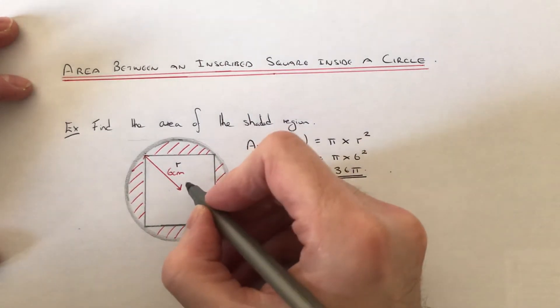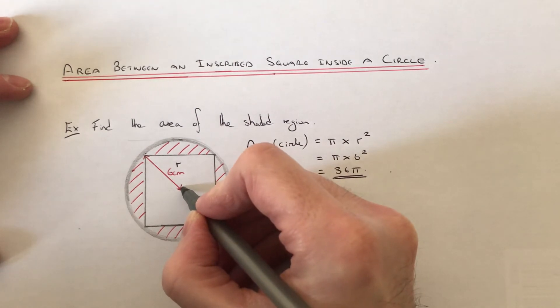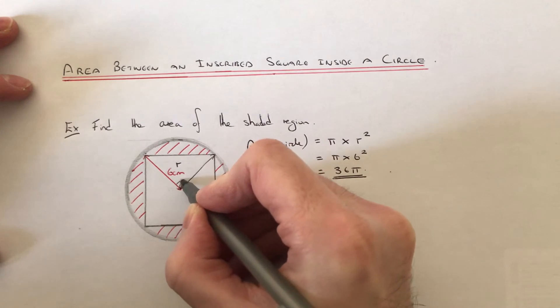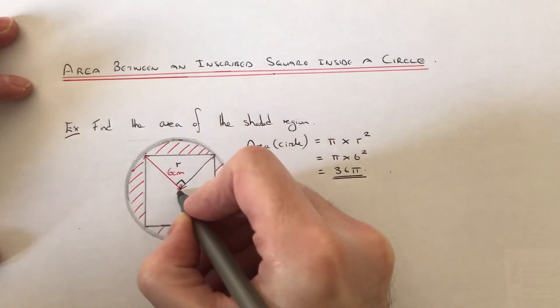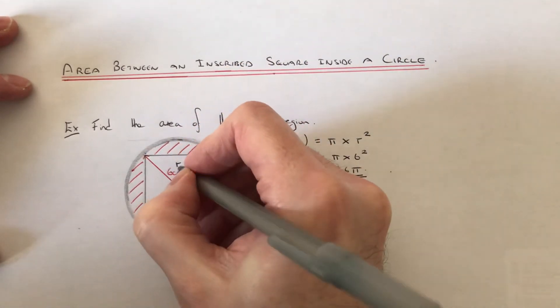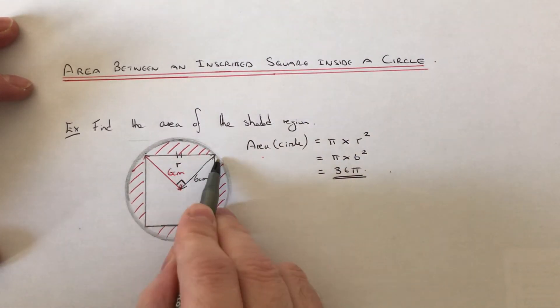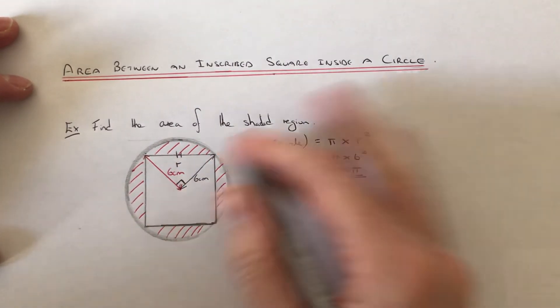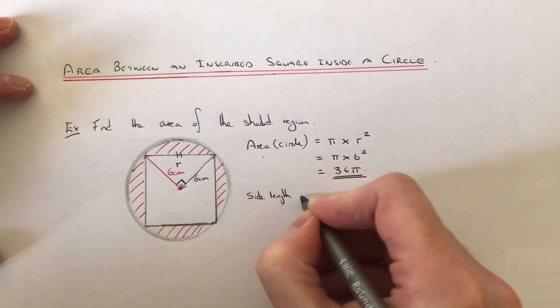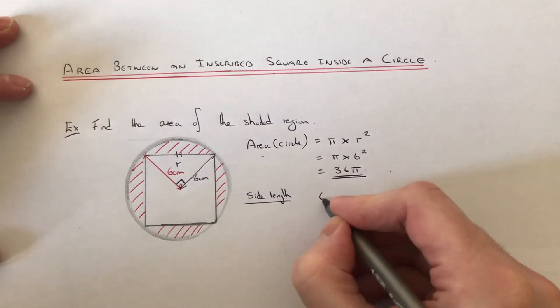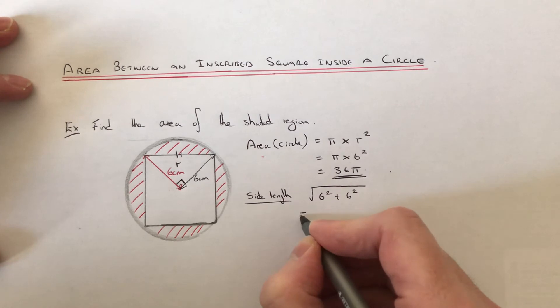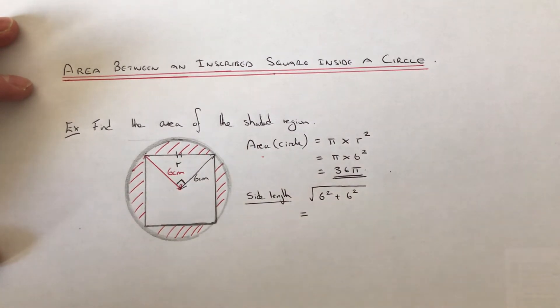The way to do this is to use Pythagoras. Because if we just make a little right angle triangle here, so that's six centimeters, that's also six centimeters, and this will be the hypotenuse of our right angle triangle. So to get the side length, we just need to do six squared add six squared and square root the answer.